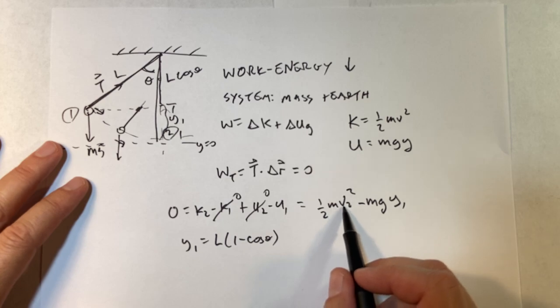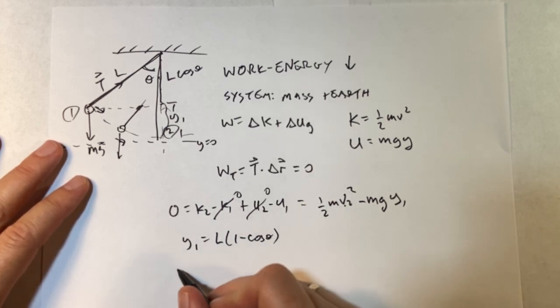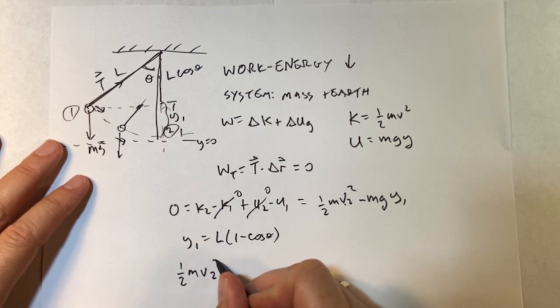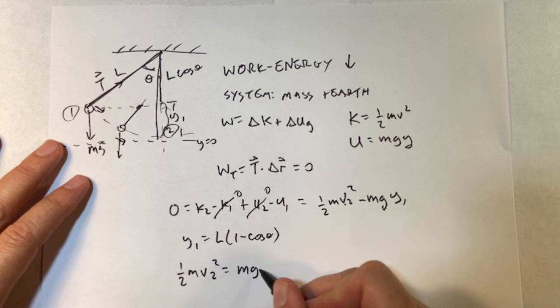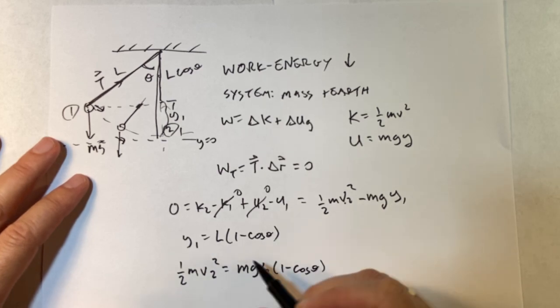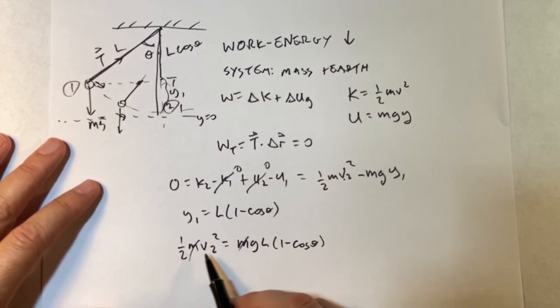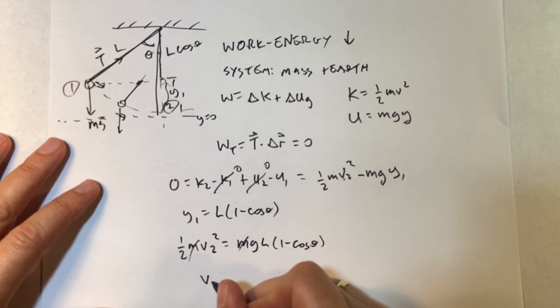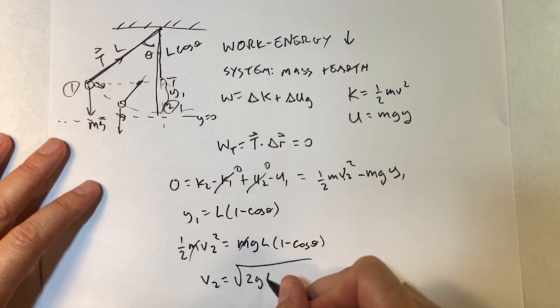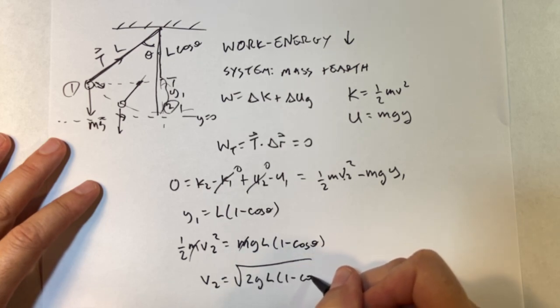So if I put that in and solve for V2, I get one half M V2 squared equals, I added this to the side, M G L times one minus cosine theta. The mass cancels. And I can solve for the velocity by multiplying by two and taking the square root. And I get V2 equals the square root of two G L one minus cosine theta.